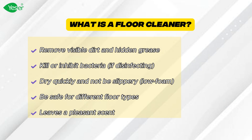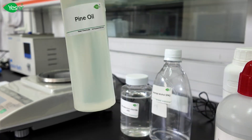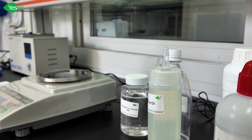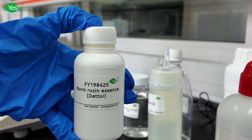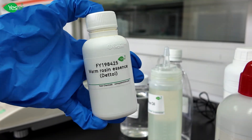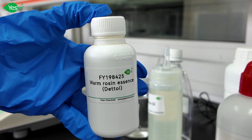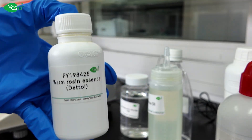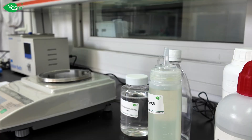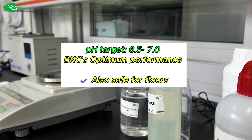For our formula today we're using pine oil as the scent enhancer. If you don't have pine oil itself, you can add a fragrance oil with a pine oil scent to improve user experience. For pH, we need to set it between 6.5 and 7, because this is where benzalkonium chloride has its optimum performance.